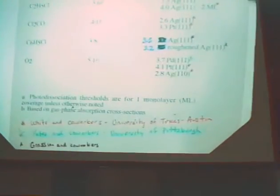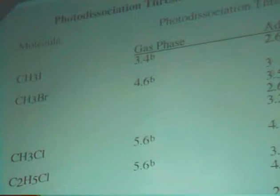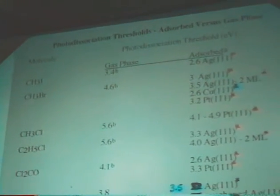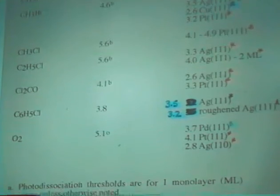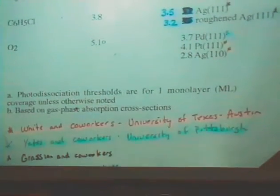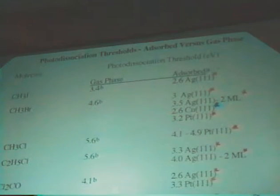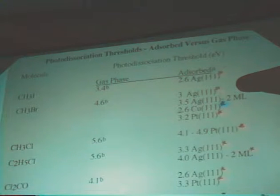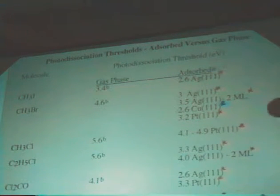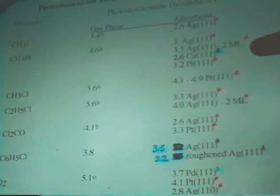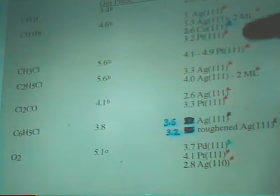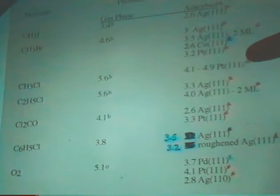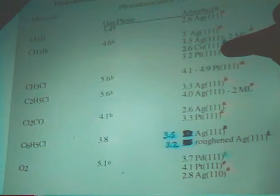Here I have collected some of these numbers from the literature, looking at the photodissociation threshold of the adsorbed molecule versus the gas phase. These numbers are based on gas phase absorption cross sections. I think you can see that there's a large shift between the gas phase values and the adsorbed molecule. For example, if you look at methyl bromide, we see 4.6 electron volts in the gas phase for the bond dissociation energy, and this shifts down to about 3 electron volts on silver. We see that it's a function of the metal.